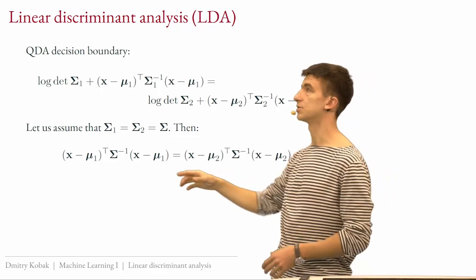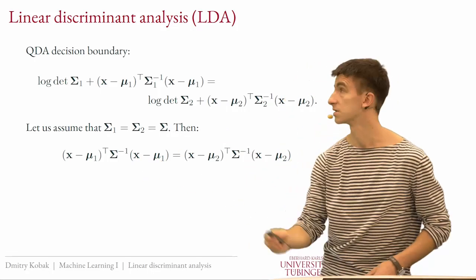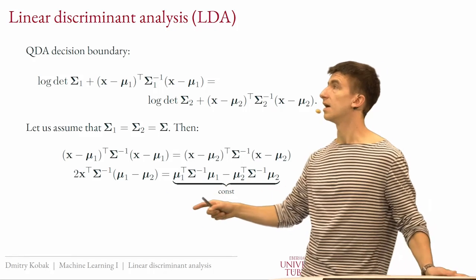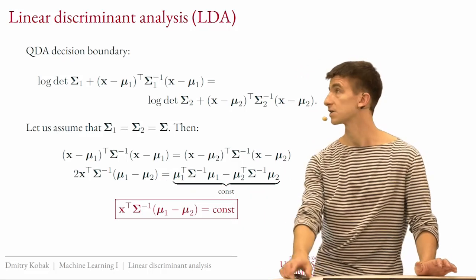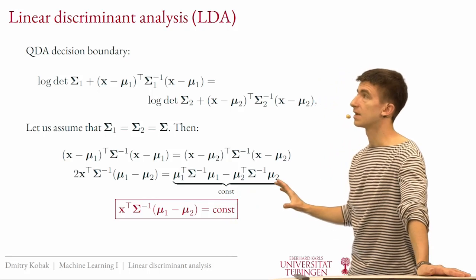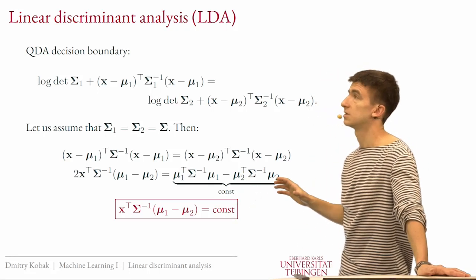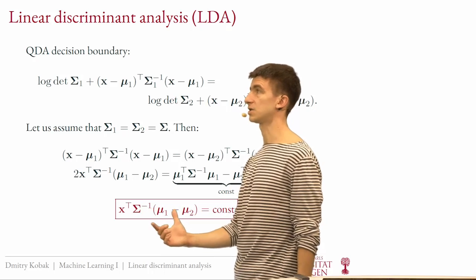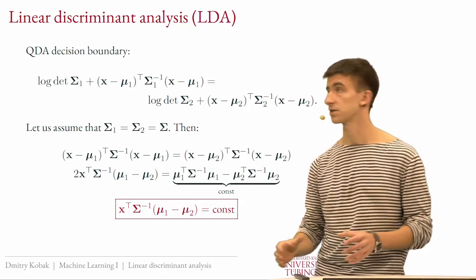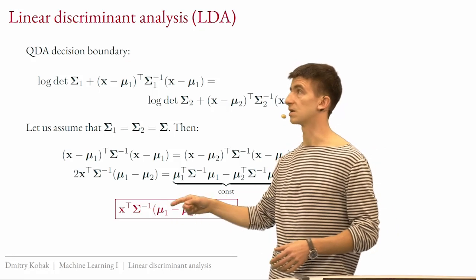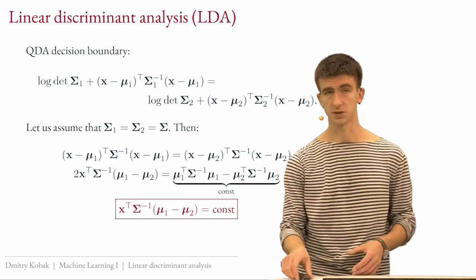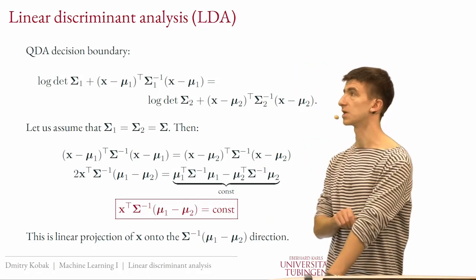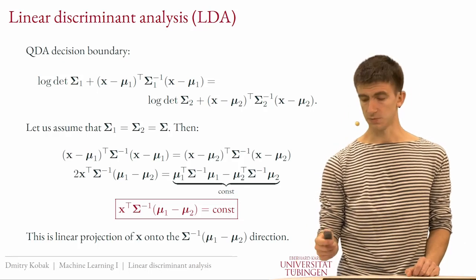Collecting all terms with x on the left and all terms without x on the right, we get a linear function of x. Dividing by two, this is the equation of the decision boundary for LDA — it's linear. We have x^T times some vector equals a constant. That vector is Σ^{-1}(μ_1 − μ_2), and this corresponds to a linear decision boundary.